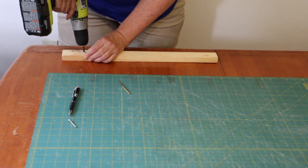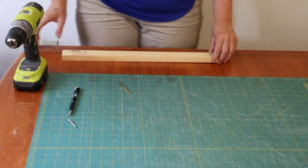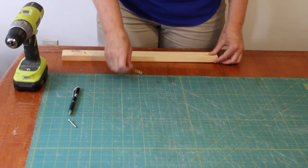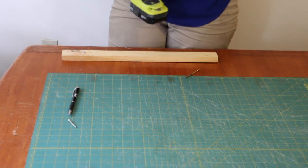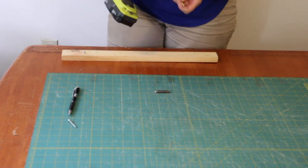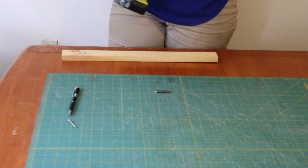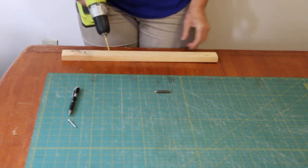There we go. Now the reason I do that first is because now when I do the other end, when I drill that hole, it's going to be right where I need it and I don't have to worry about positioning the hole and the screw. I'll just know that they're all going to be in the same place.